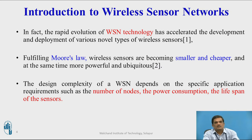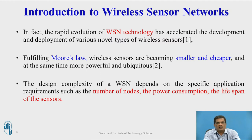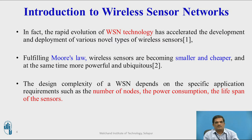The rapid evolution of wireless sensor network technology has accelerated the development and deployment of various novel types of wireless sensors such as multimedia sensors, multi-op sensors, single-op sensors, static sensors, dynamic sensors, ad-hoc sensors, etc. To fulfill Moore's law, wireless sensors are becoming smaller and cheaper, while more powerful and capable sensor nodes are available in the market. The design complexity of a wireless sensor node depends on specific application requirements such as the number of nodes, power consumption, and the lifespan of the sensors.